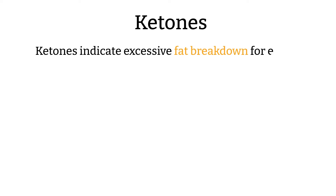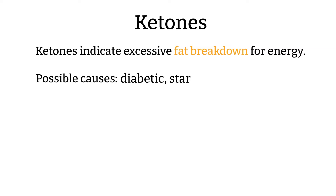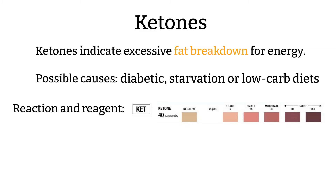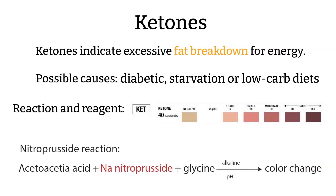Ketones. Ketone in the urine indicates excessive fat breakdown for energy. This often occurs in diabetics, starvation, or a low-carb diet. A normal amount of ketone in blood is between 2 to 4 mg per deciliter. Ketone results are read at around 40 seconds. The color changes from buff pink to maroon. The reaction is reported as negative, trace, moderate, or large, or can be reported from negative to 160 mg per deciliter. Here are the reactions and reagents for this test.